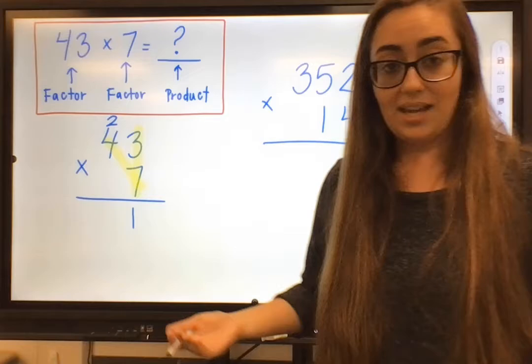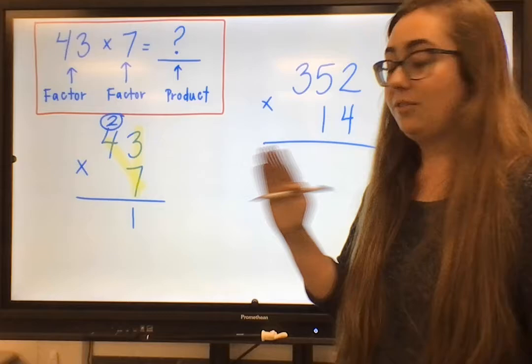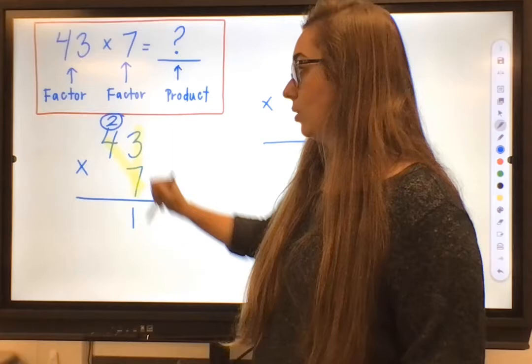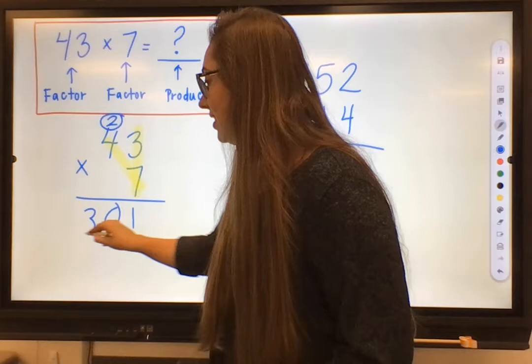Now the next one I would do is 7 times 4. I know that to be 28, but I can't forget about this little guy right here. So that's the number that we carried over from the prior step. So I have to add that to the answer that I get. 7 times 4 was 28, plus 2 is 30.